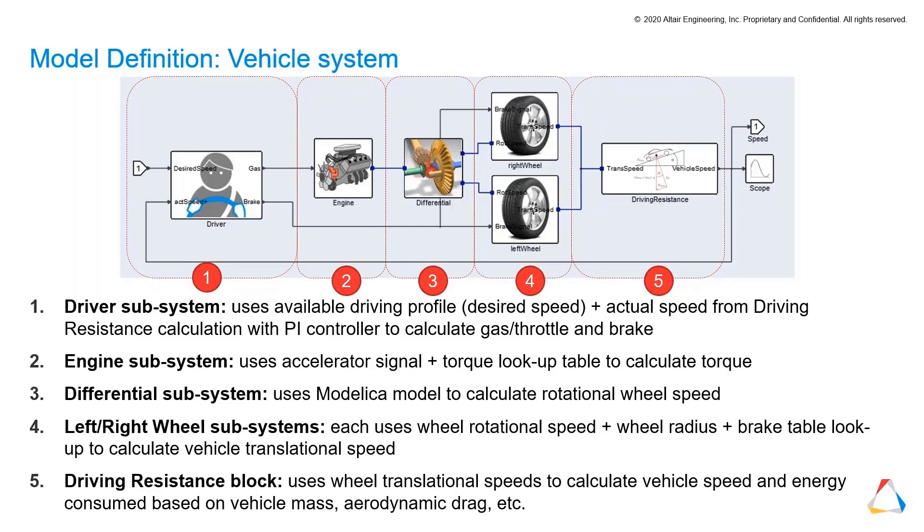Then we have our engine component, a gear, a differential gear. Then we have a right and left wheel, and we have driving resistance super block, which contains resistance like air drag, like drag resistance. Or if you have a slope driving up a hill, that's also resistance. We will take a look at this in a few seconds.